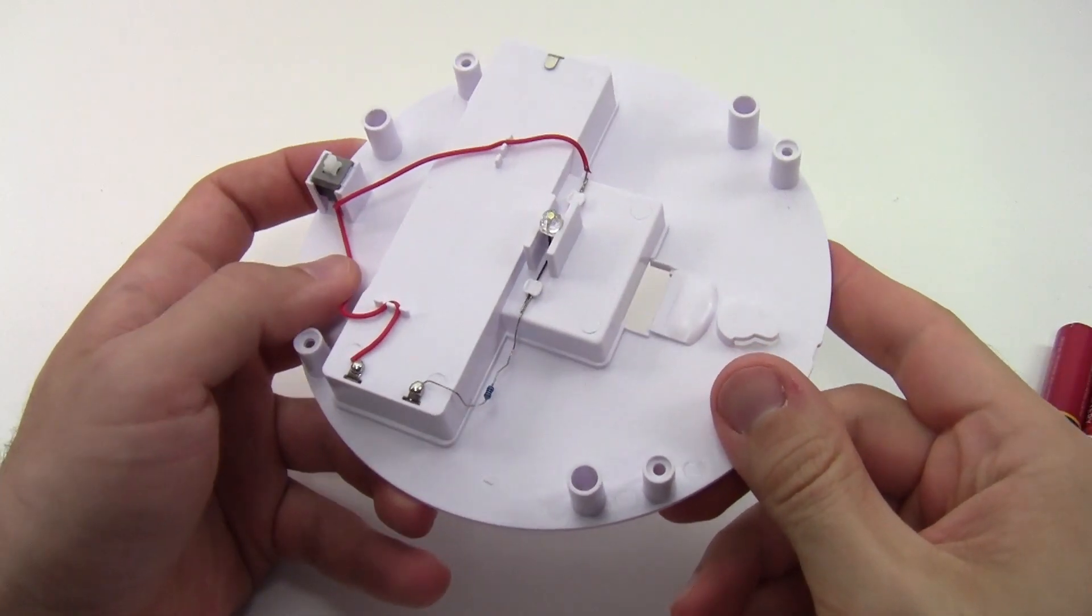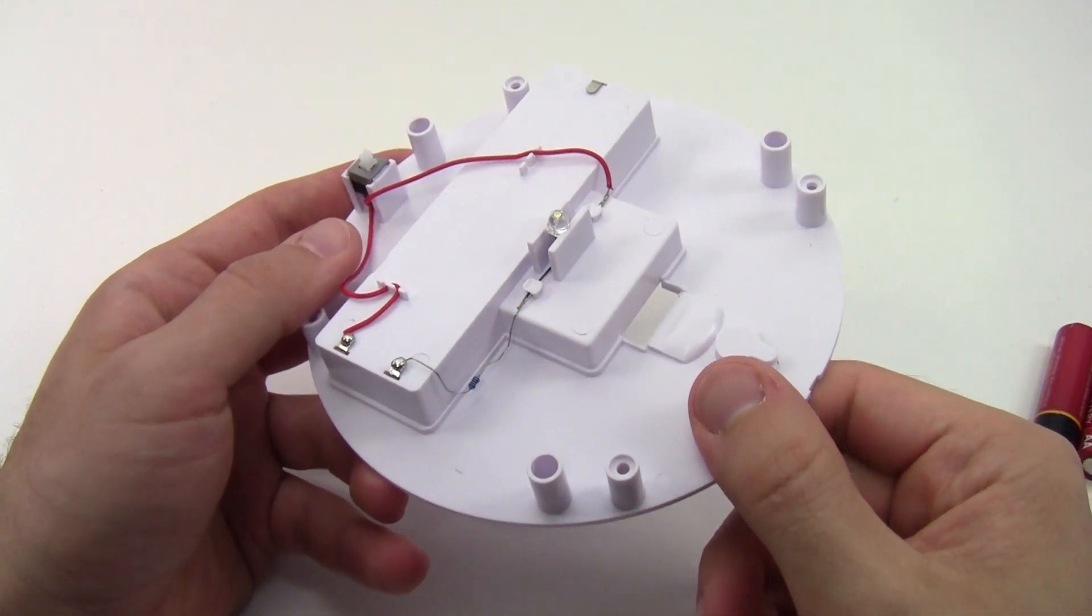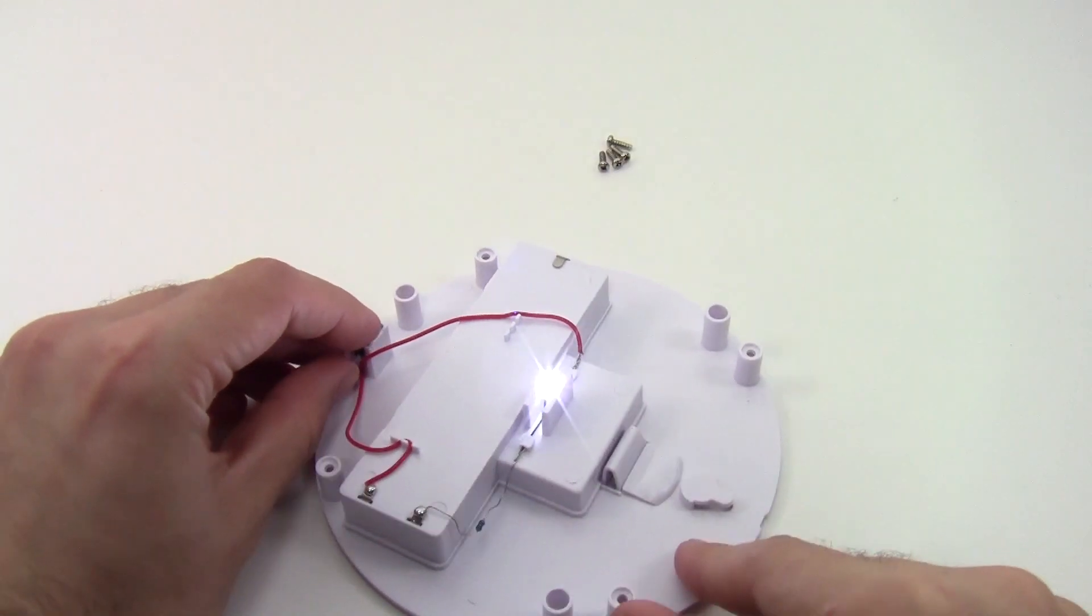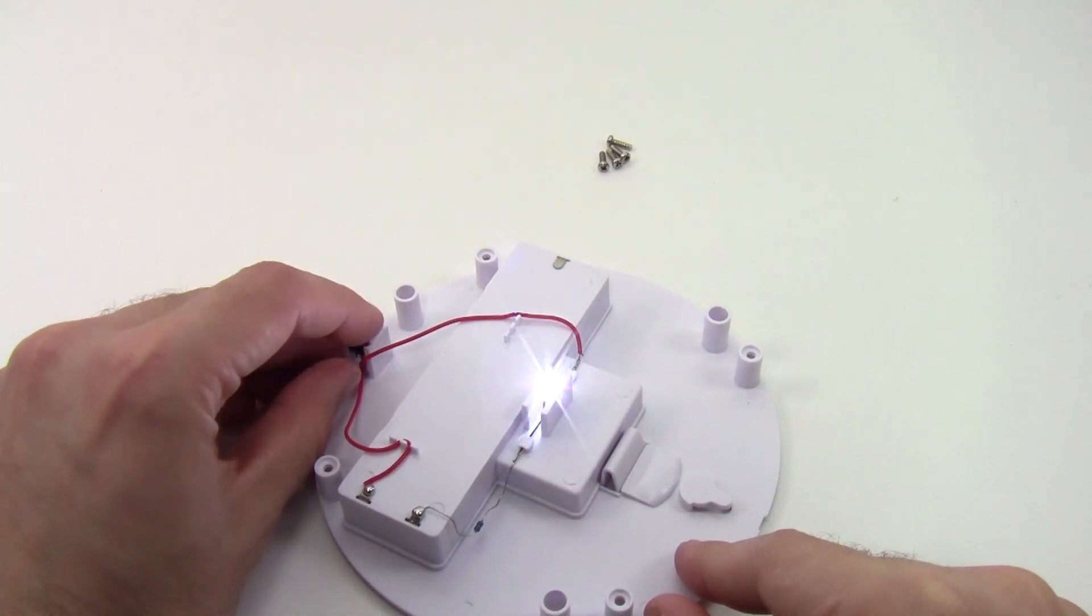I'm actually going to put the batteries back in so I can analyze what's going on in this circuit when it's powered on. Now, with the batteries in, we can see that I can use this button to toggle the LED on and off.